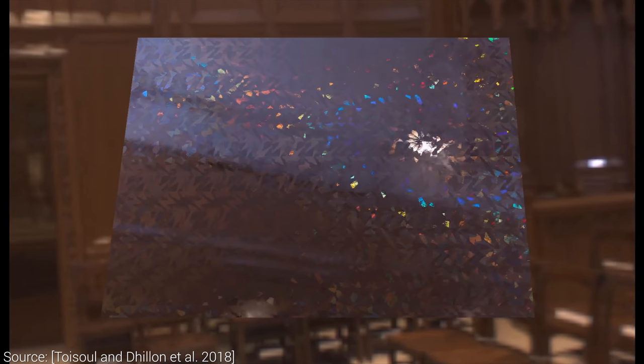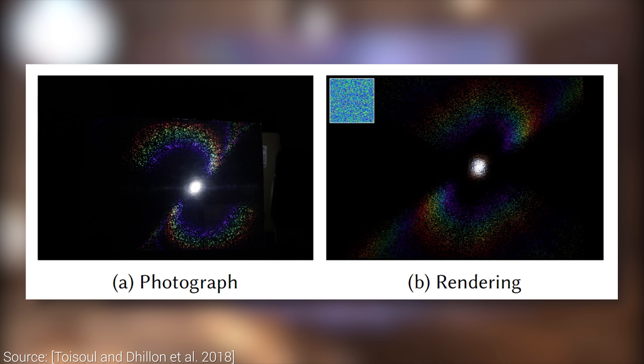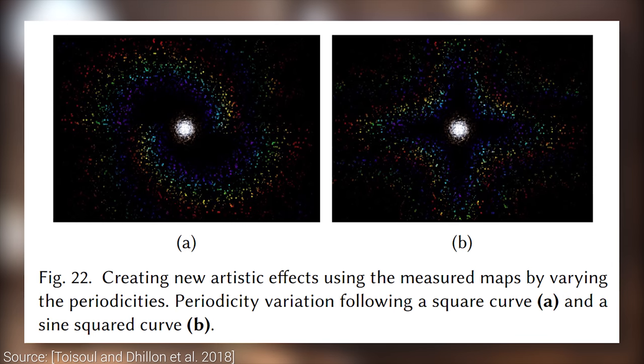These are both quite remarkable. Just think about the fact that these materials look different from every viewing angle, and they also change over the surface of the object. And for the first technique, we don't need sophisticated instruments — only a consumer DSLR camera is required. The reconstructed digital materials can be used in real time, and what's more, we can also exert artistic control over the outputs by modifying the periodicities of the material.